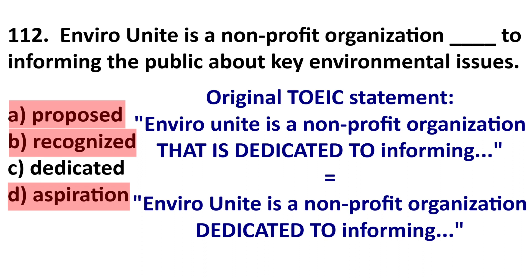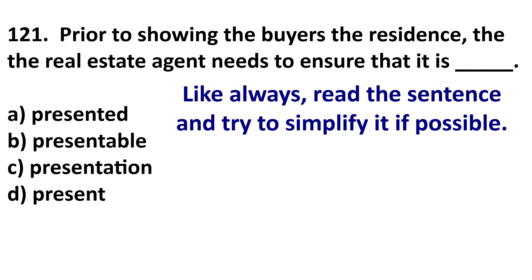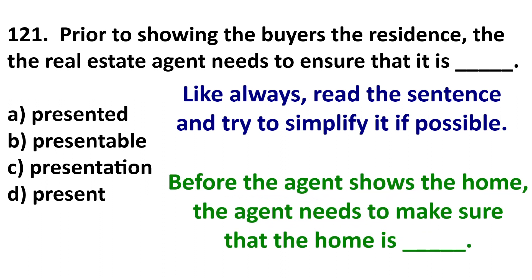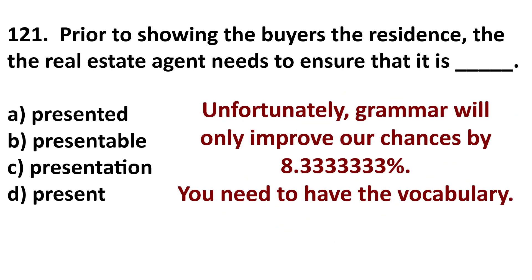Next, question 121. Let's simplify the sentence. 'Prior to' means before, and 'residence' means home, so we can simplify and say 'before showing the home.' The agent needs to make sure the home is what? We'd expect a word meaning safe, clean, or beautiful. Grammar won't help much here, but we can improve our chances with it.